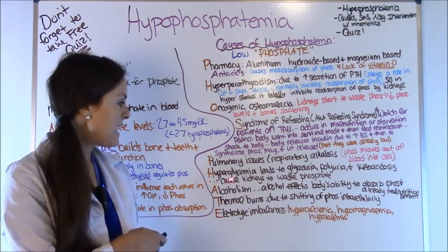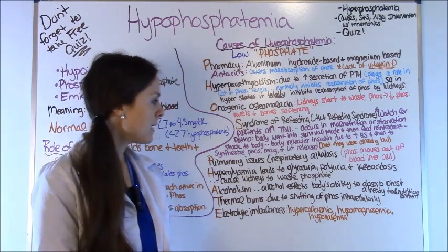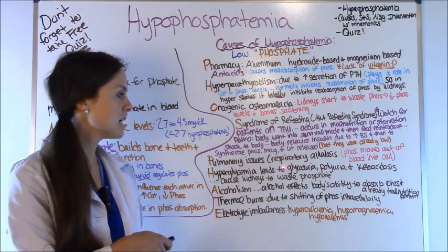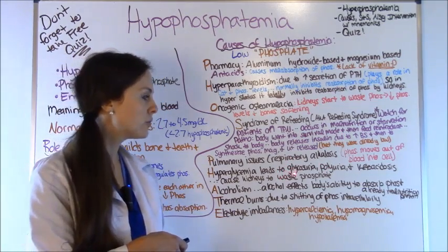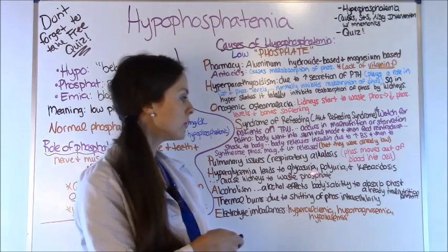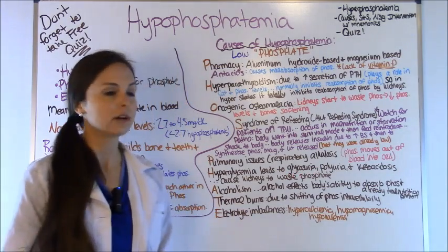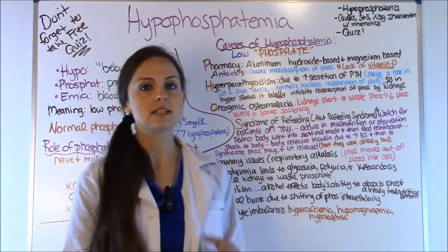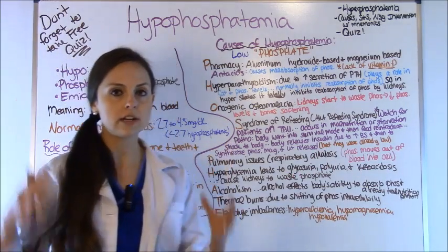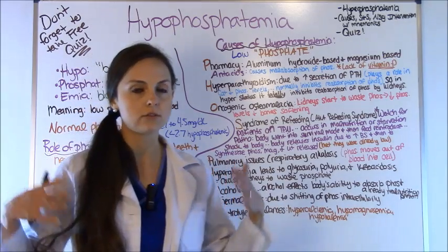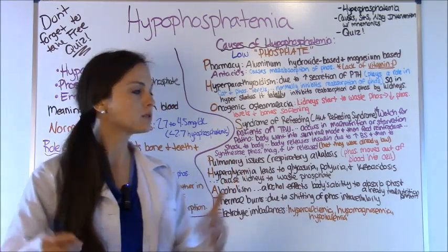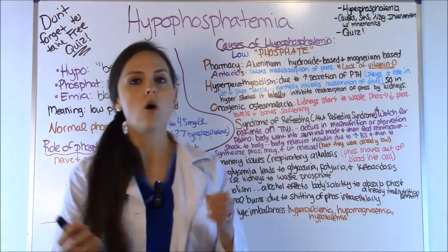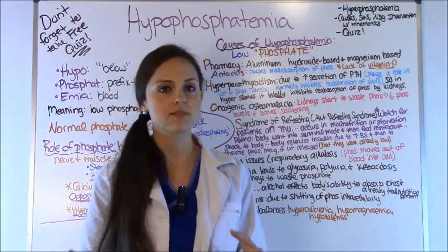H is for hyperglycemia. The patient is experiencing glycosuria, polyuria, and ketoacidosis — they're urinating a lot and wasting a lot of glucose. This causes the kidneys to also waste phosphate.